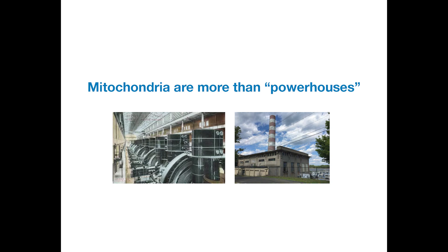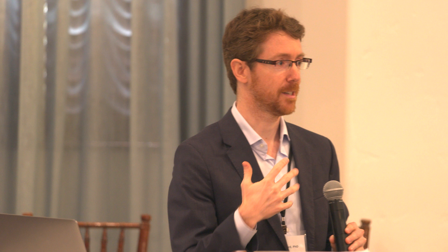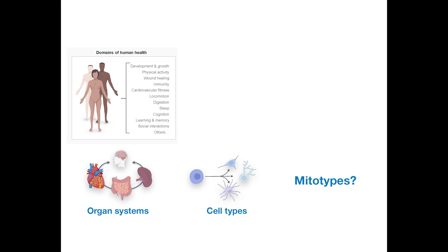Mitochondria are more than powerhouses. If we think about how we talk about the human body and health in general, we'd never say 'I went to my GP and had my body function assessed' — we'd specify liver function, cardiac function, or brain function. The lack of specificity in language actually limits developing systems. Same for cell biology — it makes no sense to talk about 'brain cells' without specifying neurons, astrocytes, glial cells, or microglia. And same thing for mitochondrial biology. There are different kinds of mitochondria, and we need to develop specificity in language — the same we have for organ systems and cell types — and then mitotypes.